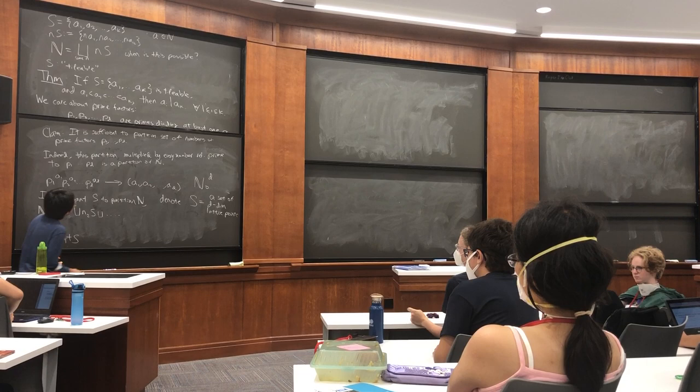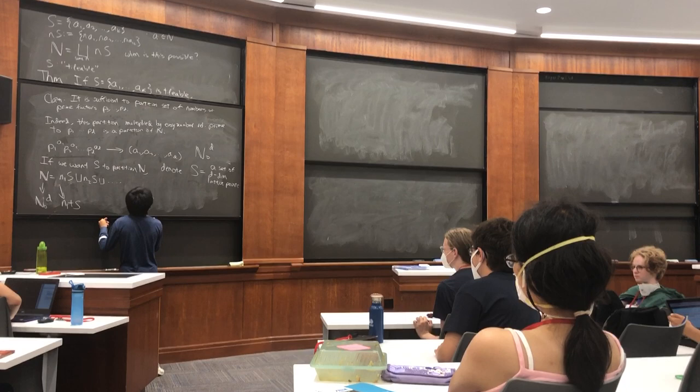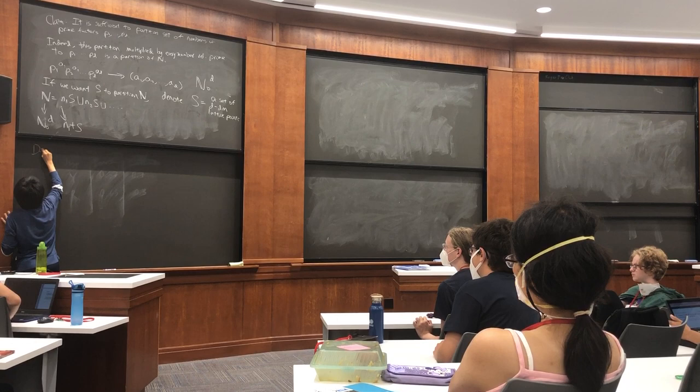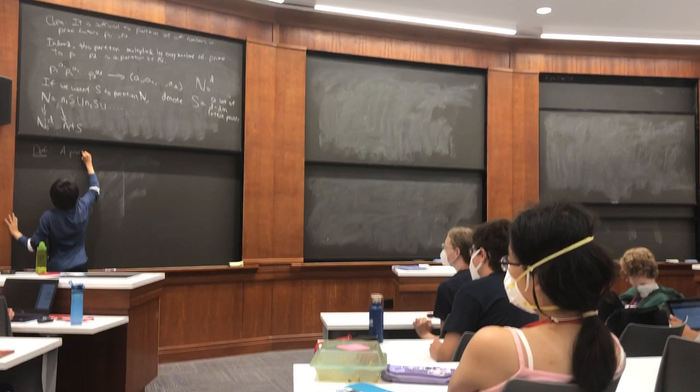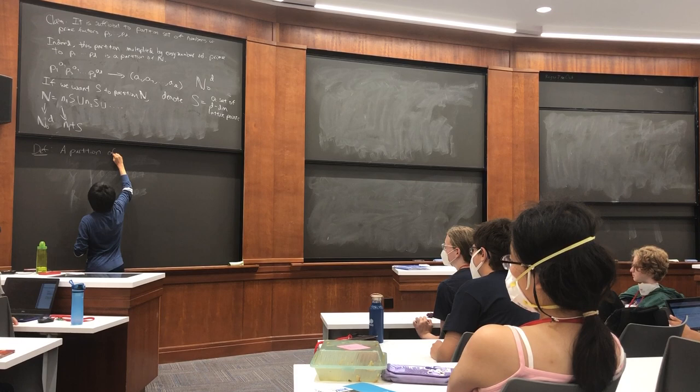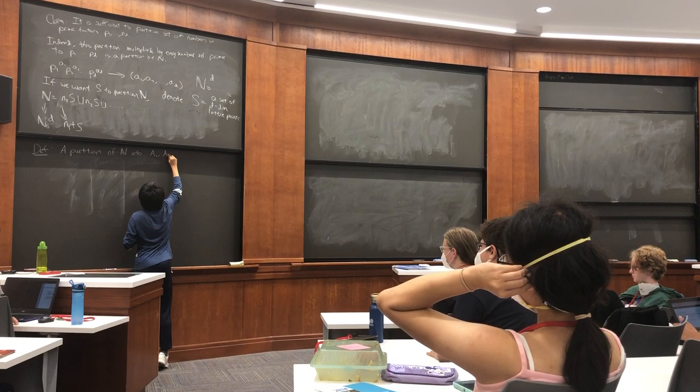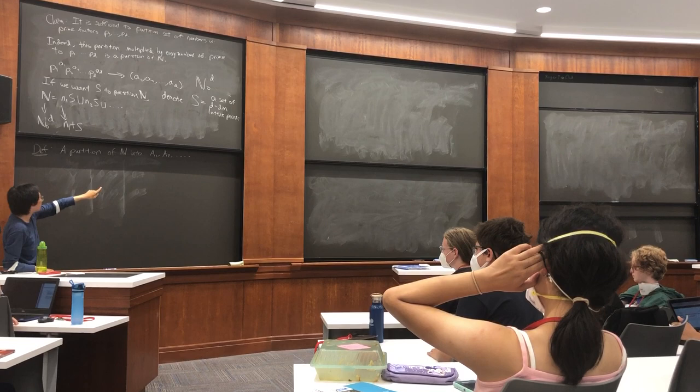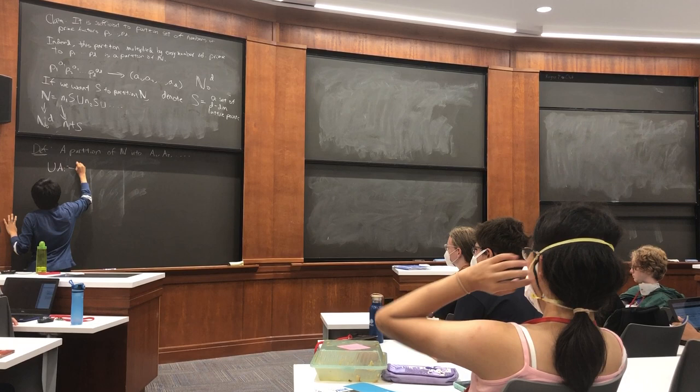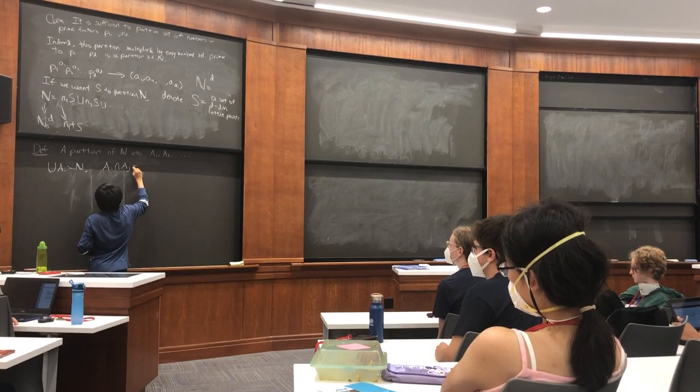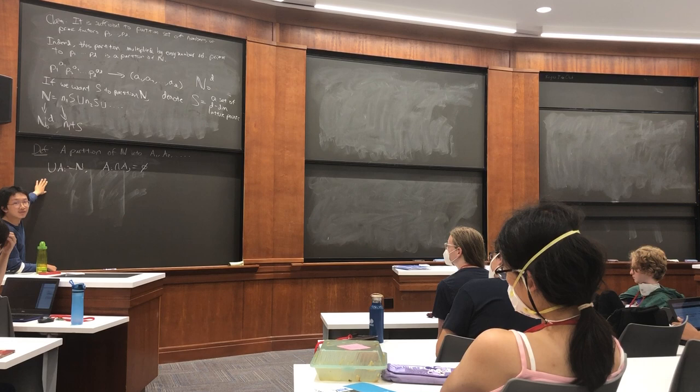What exactly do you mean by partition? Partition. Let's see, I can define partition. So a partition is, I'll just use the example of N, say of N into or by a family of sets A1, A2, means their union has to be N and each of them are pairwise disjoint. The union of Ai is N and Ai intersect Aj is empty. Are we good with the definition?